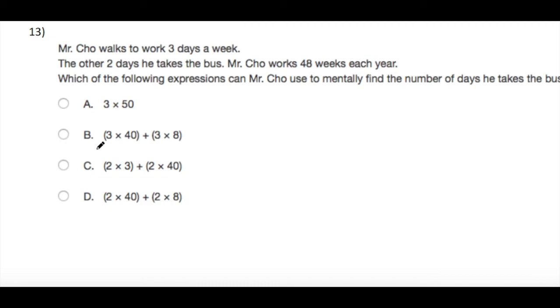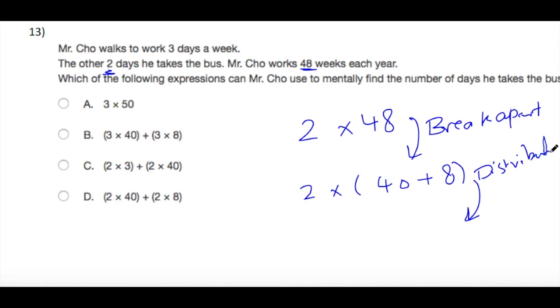Mr. Cho walks to work three days a week. The other two days he takes the bus. Mr. Cho works 48 weeks each year. Which of the following expressions can Mr. Cho use to mentally find the number of days he takes the bus? He has two days for 48 weeks, so it will be 2 times 48. Break apart 48 into 40 plus 8 using distributive property, so it will be 2 times 40 plus 2 times 8, which is D.